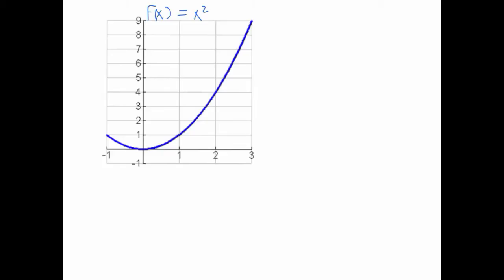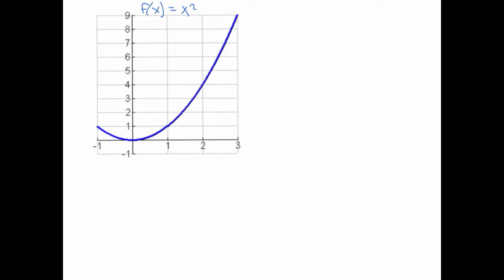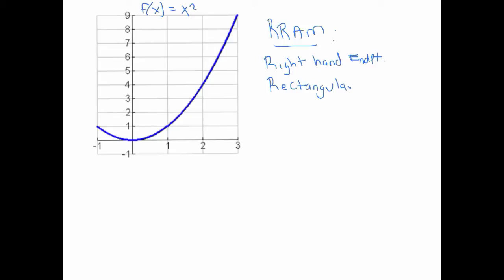Next we're going to look at RRAM — the Right-Hand Endpoint Rectangular Approximation Method — which uses the right-hand side of each subinterval to determine the height of the rectangles. We're going to do RRAM for x squared on the interval 0 to 3, but this time using 6 subintervals instead of 3, to get a better approximation.